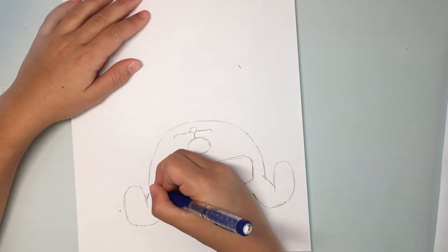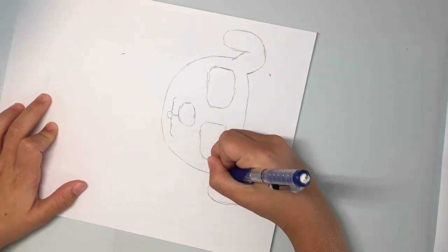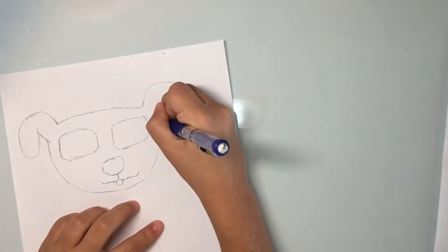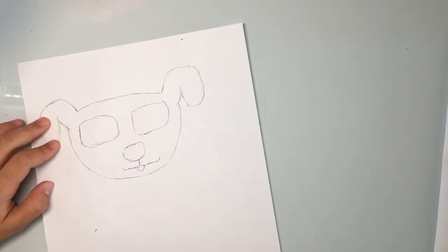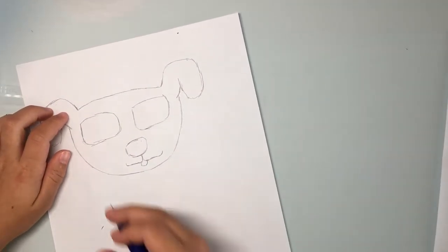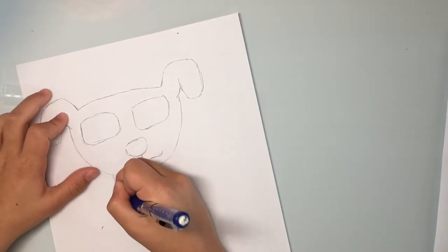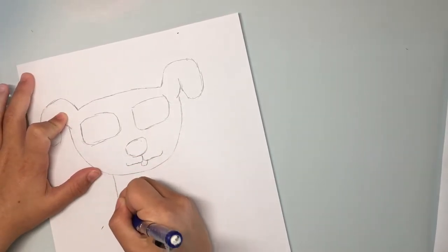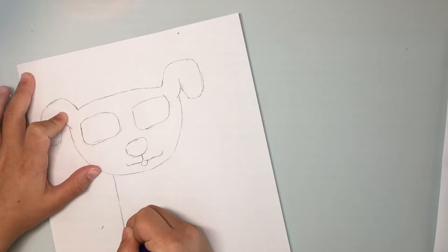I'll twist the paper so it's easier. And if it doesn't meet up, once again, just draw it in to make it meet up.